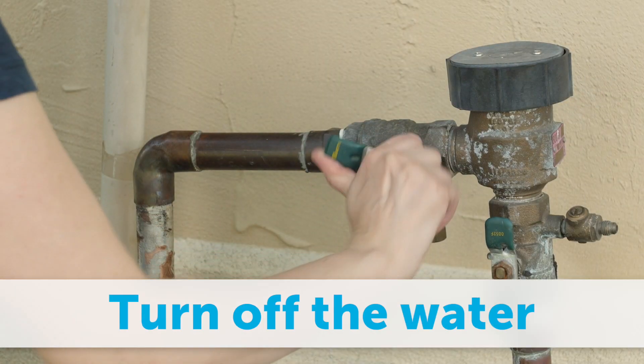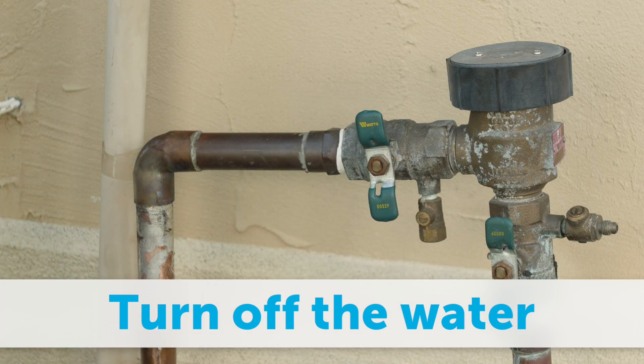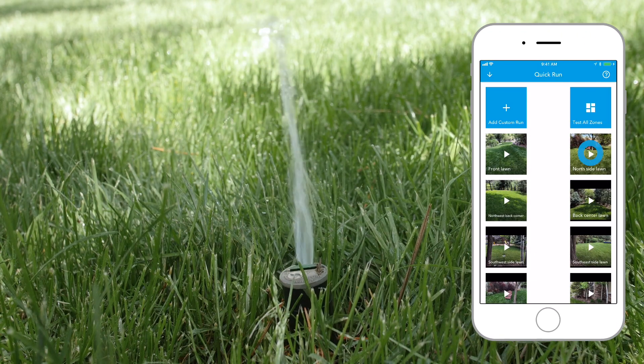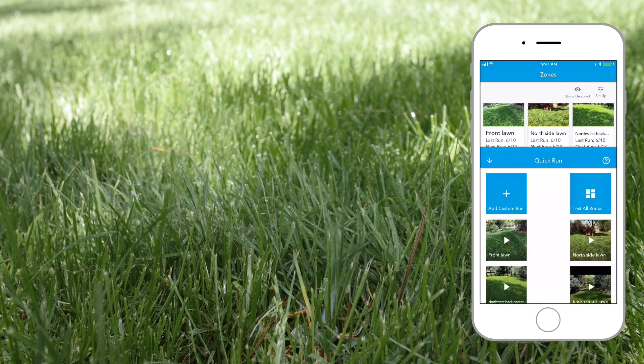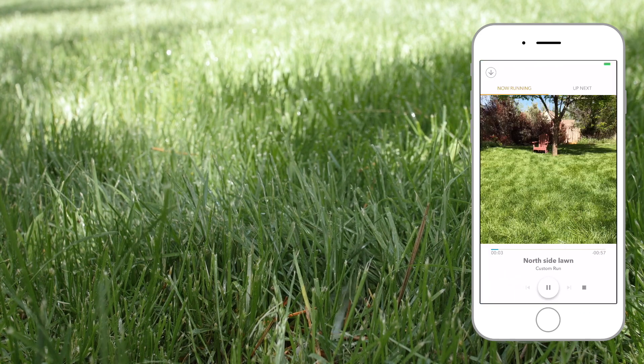Turn off the water at the backflow preventer or the main shutoff. Then use Quick Run in the app to depressurize the system. Simply run any zone for one minute. This will relieve pressure in the sprinkler pipe.